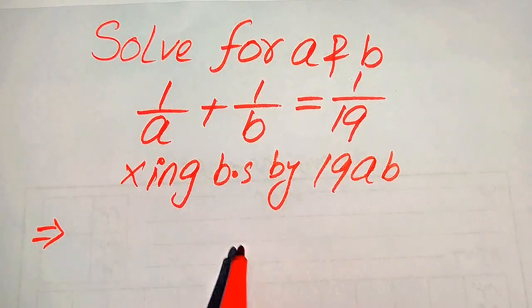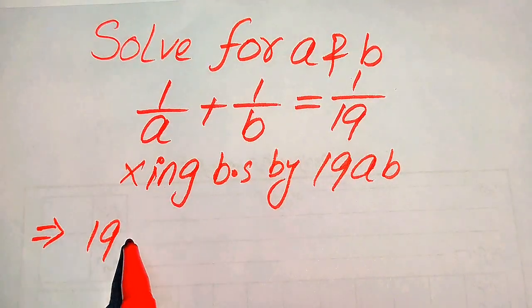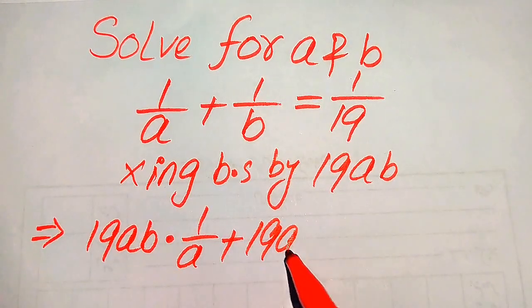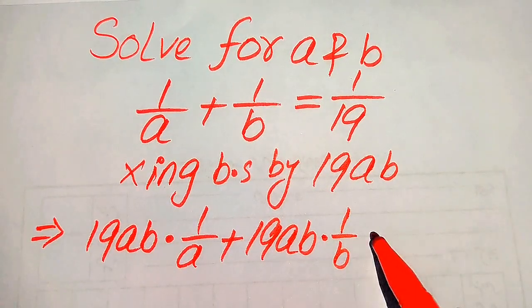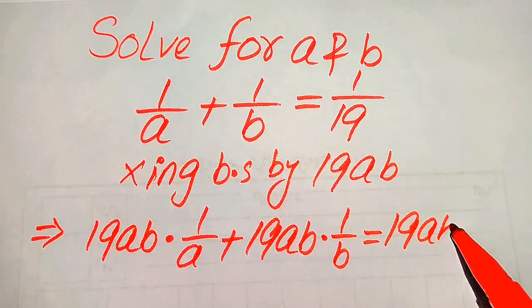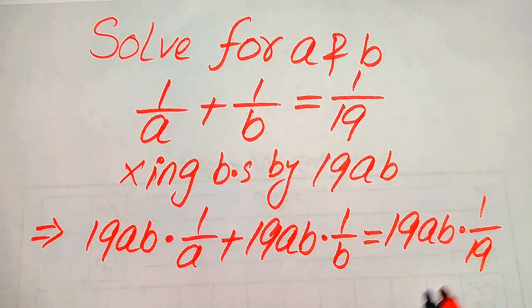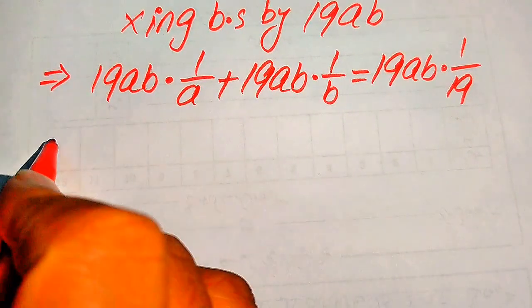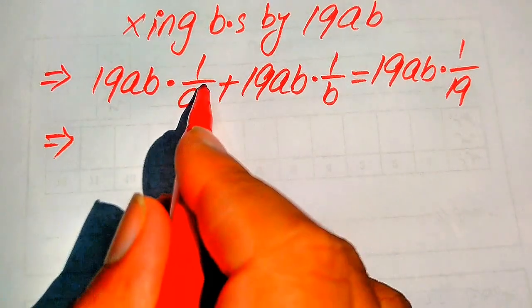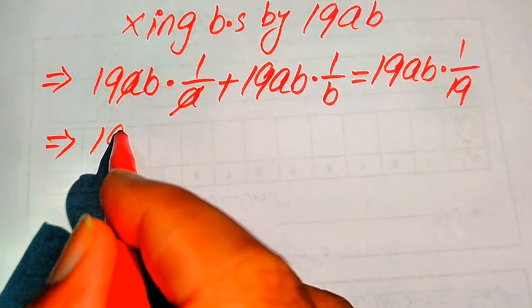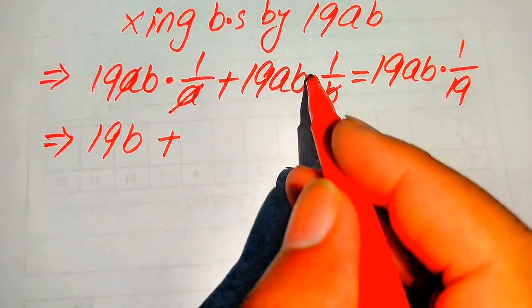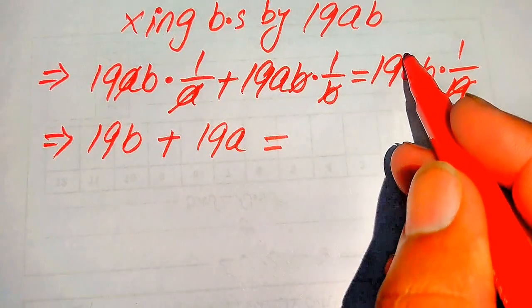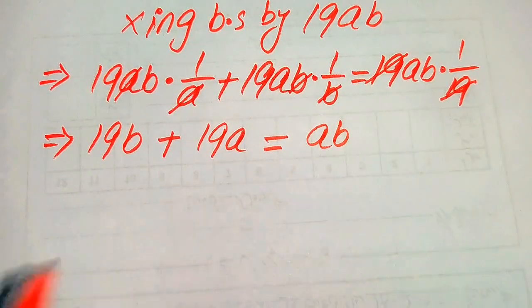When we multiply each of these terms by 19ab, it is written as 19ab multiplied by 1/a, plus 19ab multiplied by 1/b, equals 19ab multiplied by 1/19. Now we do some simplifications: this a cancels with this a, giving us 19b, and this b cancels with this b, giving us 19a, and on the right side we get ab only.